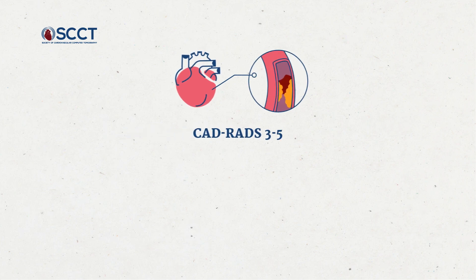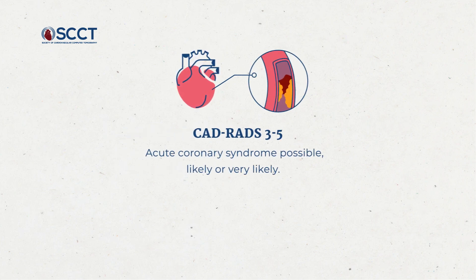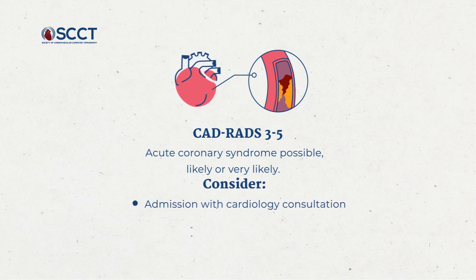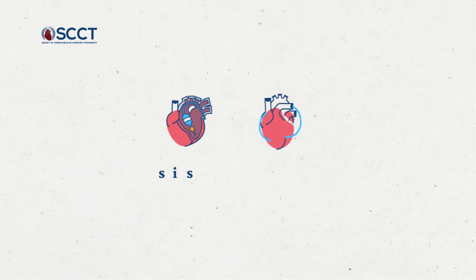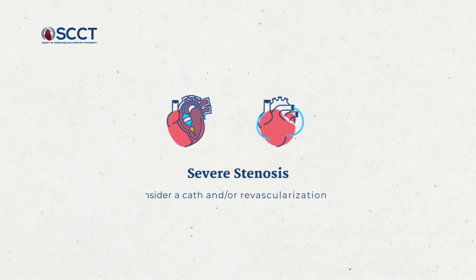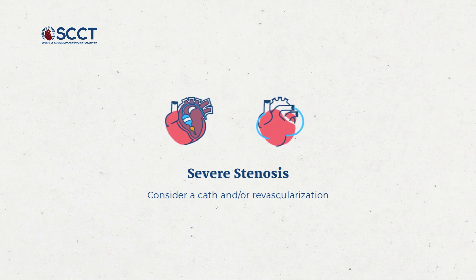For CADRADs category three to five, consider the interpretation of possibly likely or very likely acute coronary syndrome. For each of these CADRADs categories, consider admission with cardiology consultation, functional testing, as well as appropriate medical therapies. Of course, for severe stenosis in an ACS situation, consider a cath and/or revascularization as deemed appropriate by the clinical team.